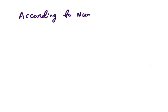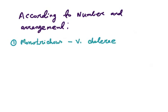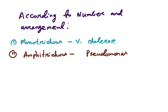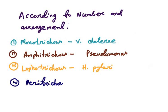According to the number of flagella and their arrangement, there are four types. Monotrichous means single flagellum at one pole, e.g. Vibrio cholerae. Amphitrichous means one flagellum at each pole, e.g. Pseudomonas. Lophotrichous means tuft of flagella at one pole, e.g. Helicobacter pylori. And lastly peritrichous which means multiple flagella around the cell, e.g. E. coli, Proteus, and Salmonella.